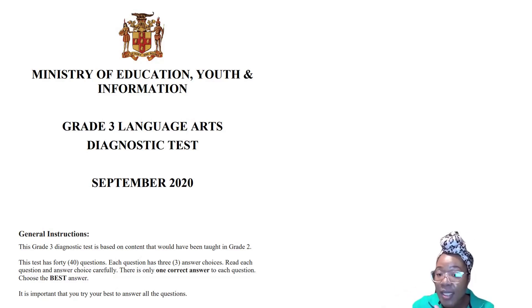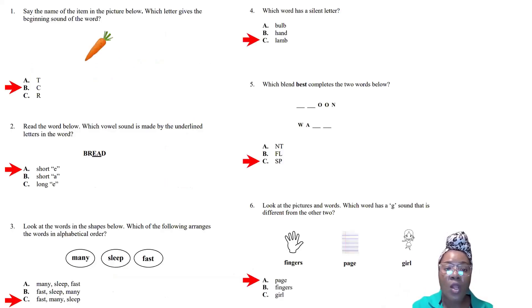Let's look at question one. Say the name of the item in the picture below. Which letter gives the beginning sound of the word? We see a picture of a carrot, C-A-R-R-O-T. Right away you know it's not a T sound or R sound, it's a C sound, a hard C sound. So the answer is B.